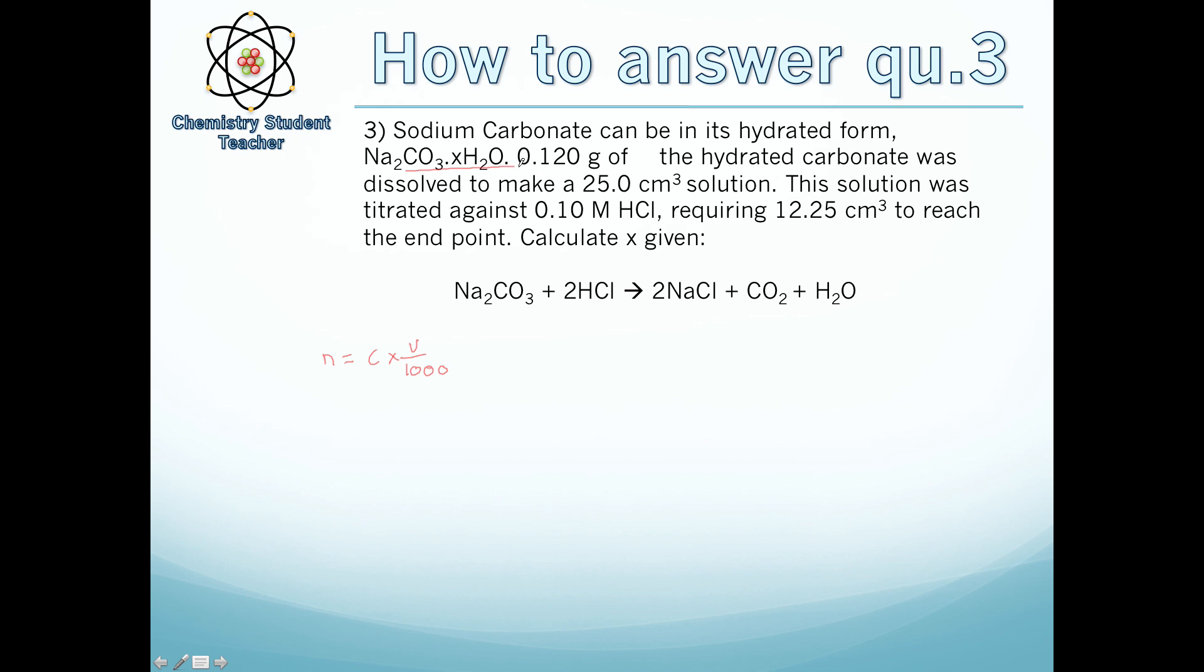Let's look at the data. We have 0.120 grams of carbonate making a 25 cm³ solution, the concentration of HCl, and the volume required. The problem is we don't know x. You may be thinking we could use n = m/M to get number of moles and work out the concentration that way. Unfortunately we can't as we don't know the molar mass. We've got to use the titration to work out the molar mass, then we can rearrange to find x. So for HCl: n = 0.10 × 12.25 / 1000. You put that in your calculator, you get number of moles being 1.225 × 10⁻³ moles.